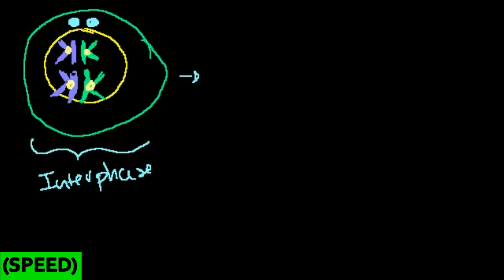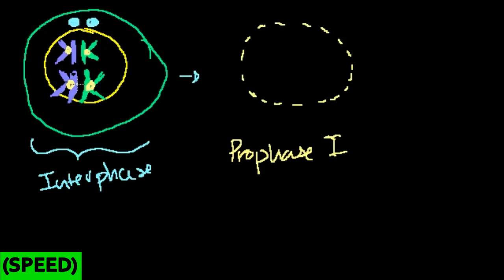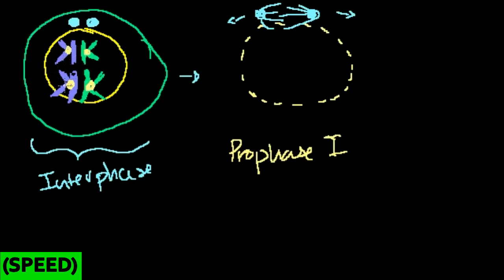Let's enter prophase 1 of meiosis I. Just like in prophase in mitosis, a couple of things start happening: your nuclear envelope starts disappearing. The centrosomes start facilitating the development of spindles and they start pushing apart to opposite sides. Remember, in interphase, even though I drew chromosomes, they don't actually exist in that wound-up state — they exist in a chromatin state.